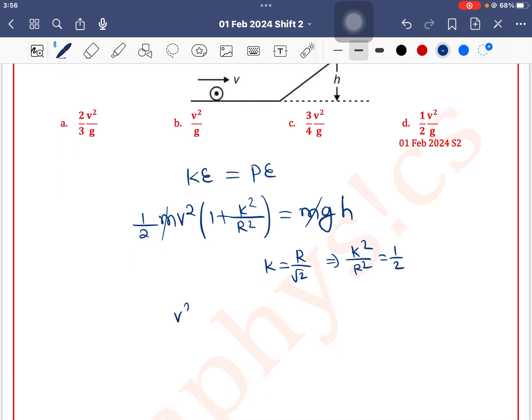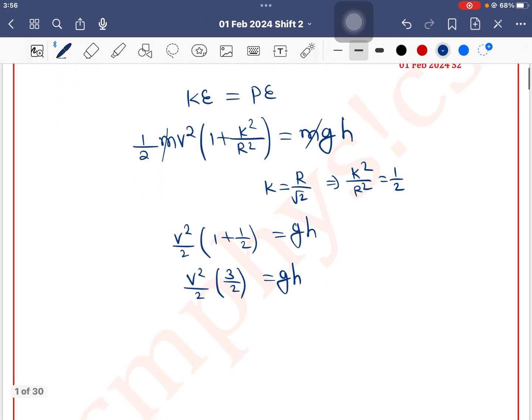So V²/2 × (1 + 1/2) = gh. This becomes V²/2 × 3/2 = gh, which simplifies to 3V²/4 = gh.